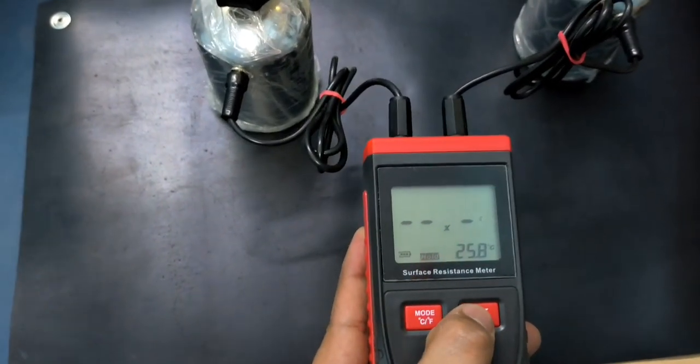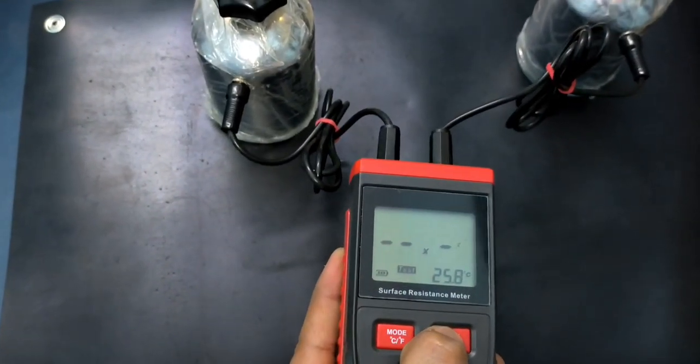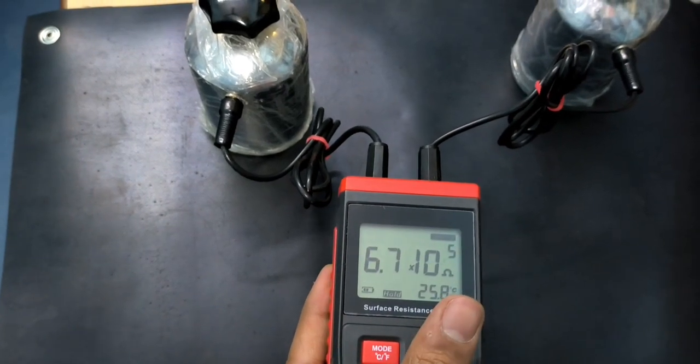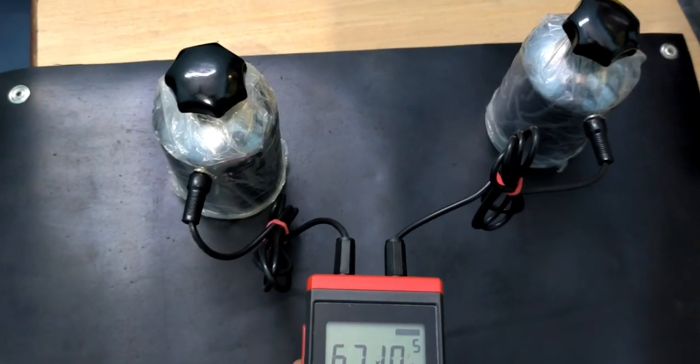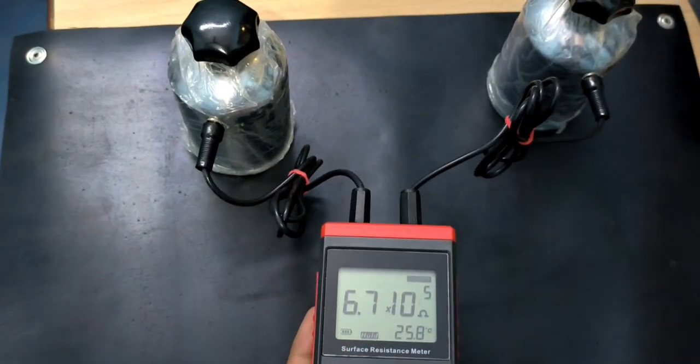If I check it again, I have to press and hold. Now again you can see it's showing 10^5, same reading. So you can use it with and without probes. Thank you.